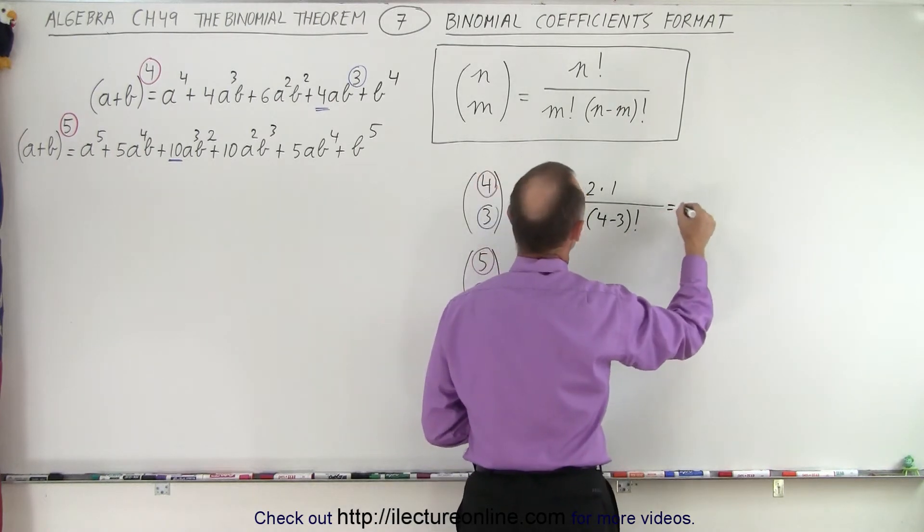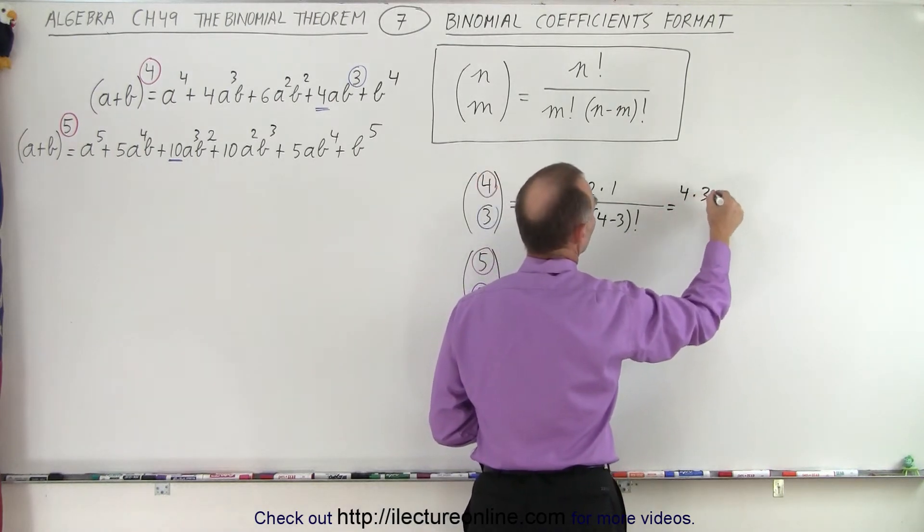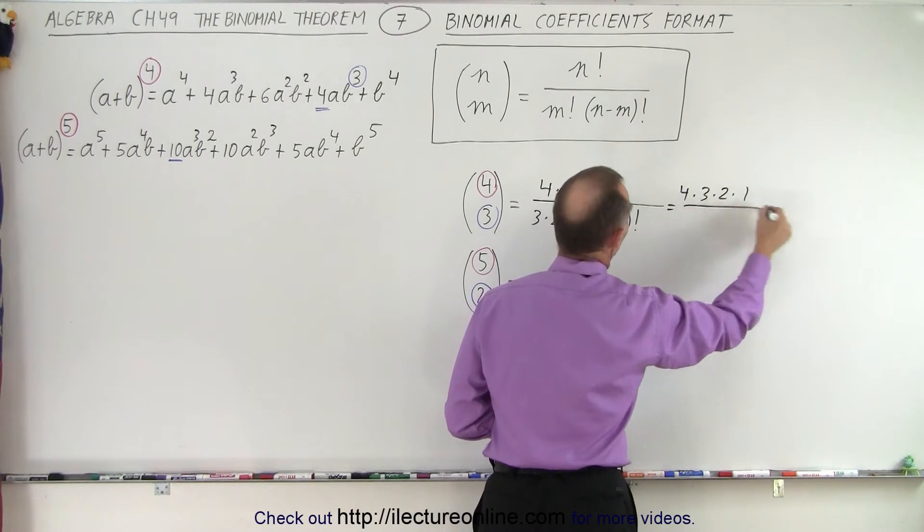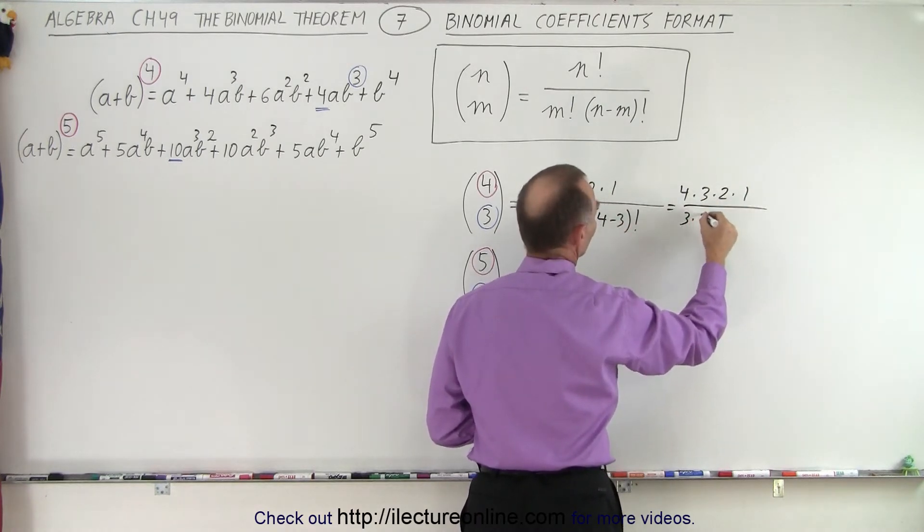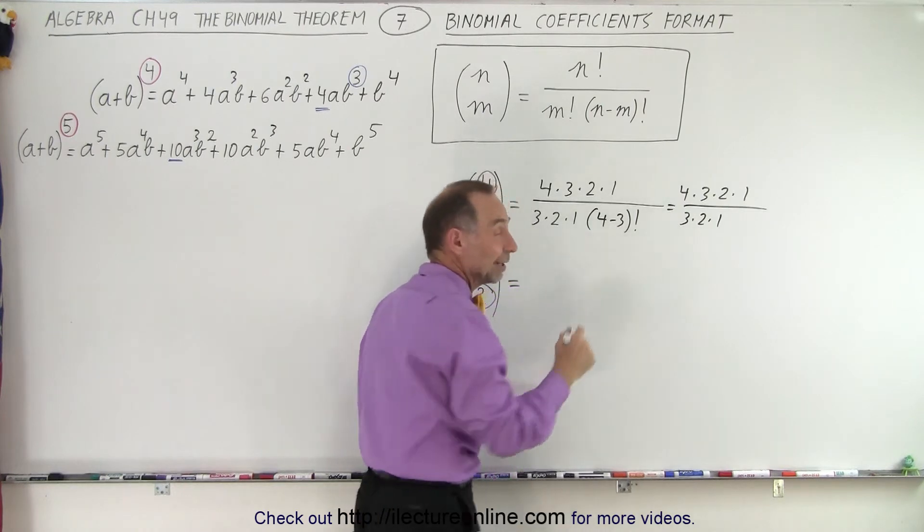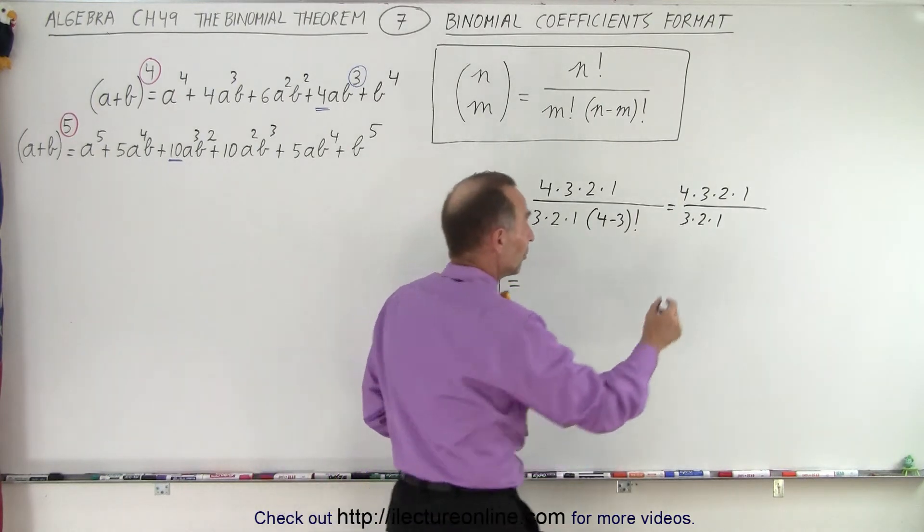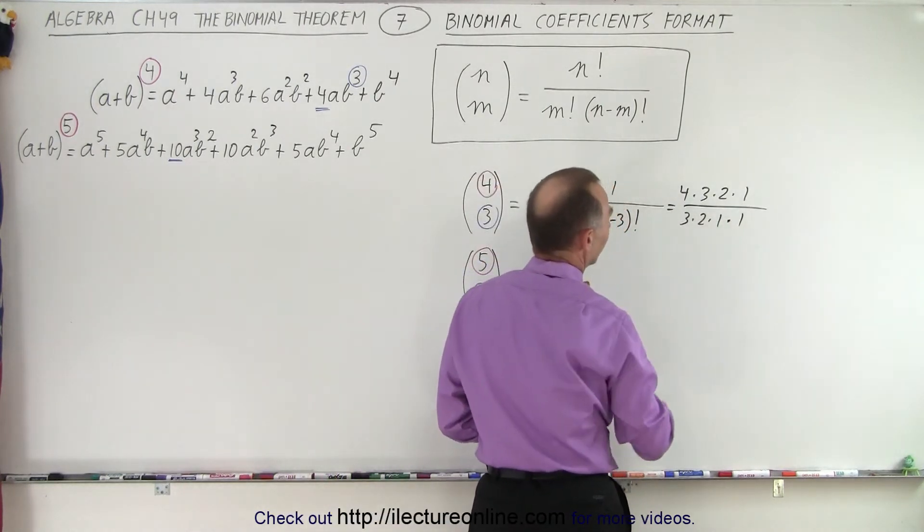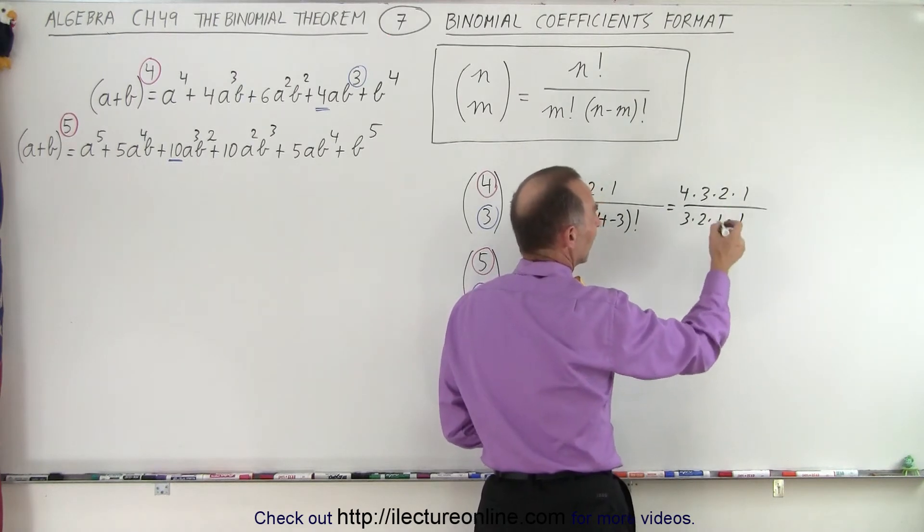This is 4 factorial divided by 3 factorial times the difference, 4 minus 3 factorial. So this becomes 4 times 3 times 2 times 1 divided by 3 times 2 times 1, times 1 factorial, which equals 1.